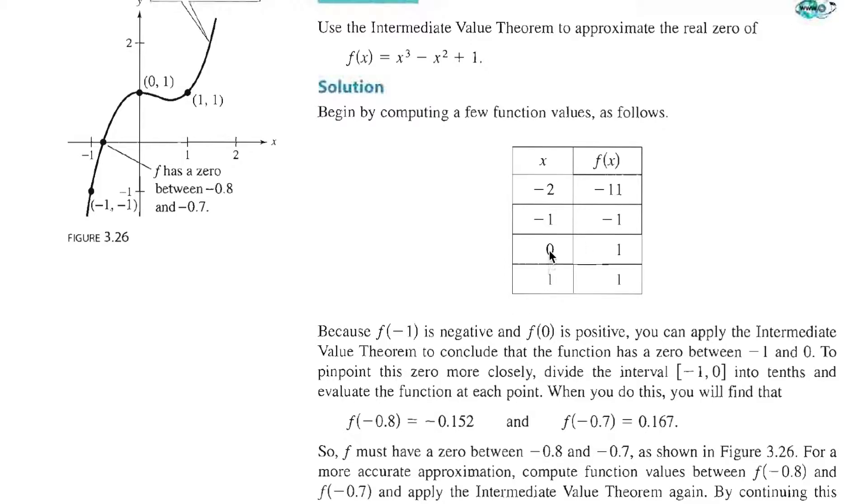So they've decided to break up between negative 1 and 0 into tenths. Let's look at -0.1, -0.2, -0.3, and so on to -0.9, so we can find the tenth at which we're switching from negative to positive.